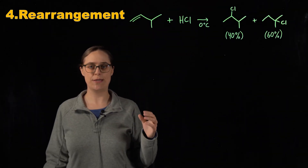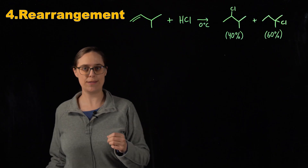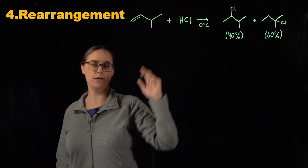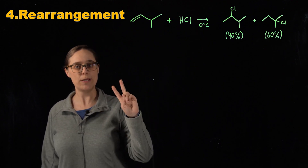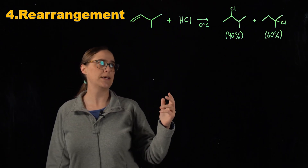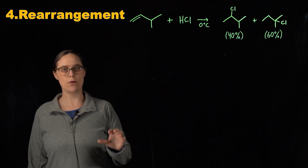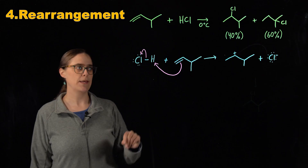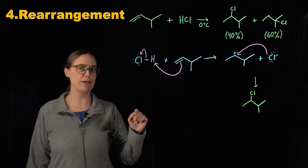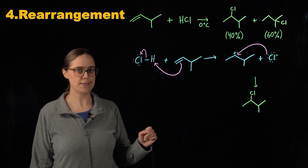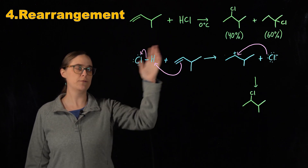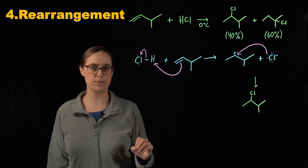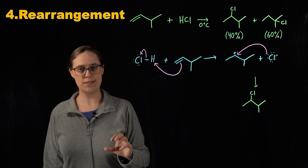Pattern number four is rearrangement — when at least one atom moves within a molecule. This is not a step within a reaction mechanism; this is an overall chemical equation. 3-methyl-1-butene plus hydrochloric acid, when reacted together in real life, gives a mixture of two different products: at zero degrees Celsius, about 40% of the first product and 60% of the second. The very first step in this mechanism was proton transfer, and from there we can use nucleophilic attack to explain how the first product formed. However, the first three patterns all fail to explain how the second product formed — whenever you're in this sort of situation, you need to start considering rearrangement.